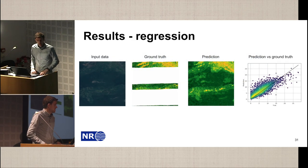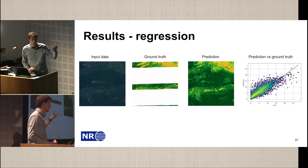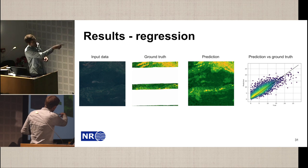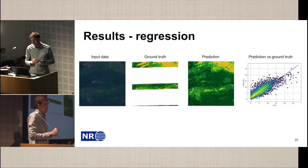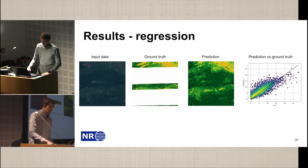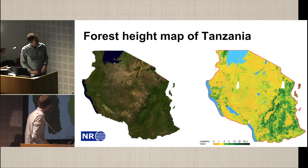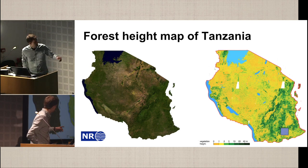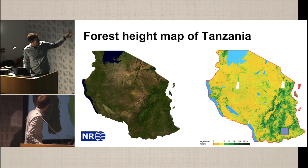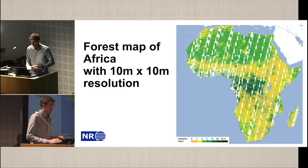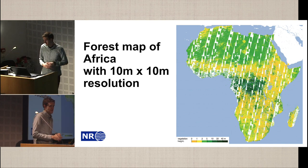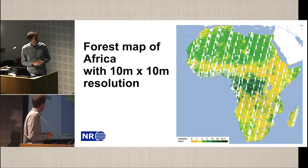We also did this as a regression problem, where the output was the tree height directly, not three classes. Plotting the ground truth value against the predicted value on the test data, it seems to work quite well. We then applied this to all of Tanzania — remember, we had training data only from a small section — and it correlates well with what we see in the satellite image. We also applied it to all of Africa, producing a forest map with 10 by 10 meter resolution — about 300 billion pixels.